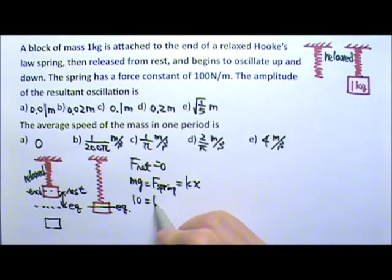The mass is 1 kg, so Mg is 10 N. The spring constant is 100. So at the equilibrium, the spring is stretched by 0.1 meters.